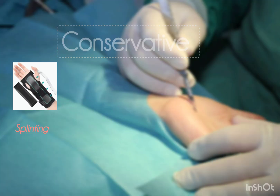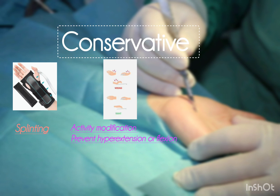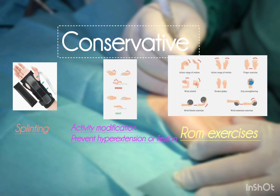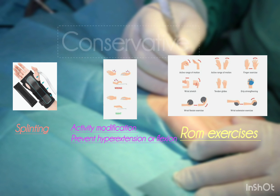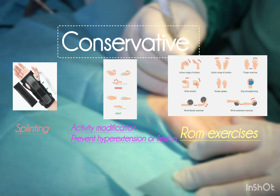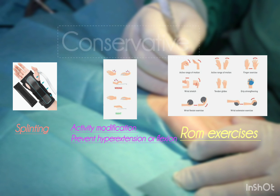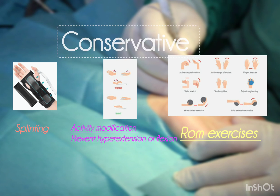Management includes conservative and surgical approaches. Conservative management can be tried in patients with mild disease, such as splinting and activity modification to prevent hyperextension, hyperflexion, or repetitive movements that can compress the median nerve. Active range-of-motion exercises are also used to maintain wrist mobility.